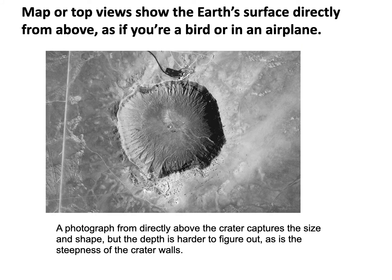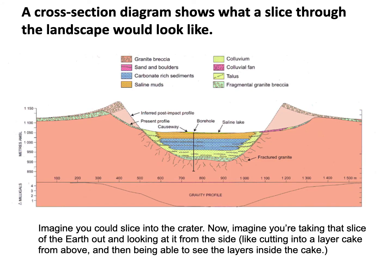This photograph is from directly above the crater, so it's called a map or top view. A map view gives an accurate representation of the size and shape of the crater, but its depth and steepness are not represented — as if you're flying above it in an airplane or like a bird. The third diagram of Meteor Crater is not a photograph; it's very brightly colored, has different layers represented, and looks like something you could draw with colored pencils. This is a cross section diagram, illustrating an interpretation of what a slice into the earth at the crater would look like from the side — like a slice cut into a layer cake where you see the layers when you serve the cake. Cross sections are interpretations based on data, such as rock types at the current surface and a borehole drilled into the middle of the crater, along with knowledge from other studies on crater formation.